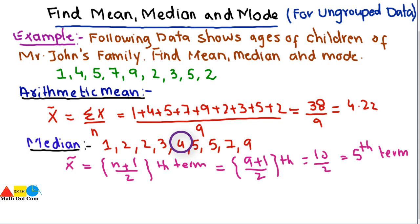So keep this in mind that here the data is odd. So for odd data, that is odd data means that the number of observations is the odd number, so it will be easier to find the median of such data.